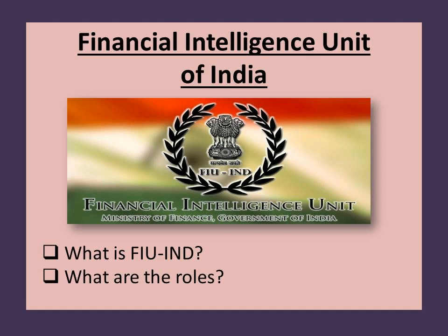Two: Analysis of Information. Analyze received information in order to uncover patterns of transactions suggesting suspicion of money laundering and related crimes. Three: Sharing of Information. Share information with national intelligence or law enforcement agencies, national regulatory authorities, and foreign financial intelligence units.